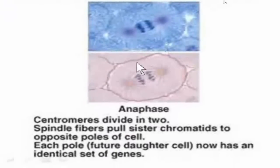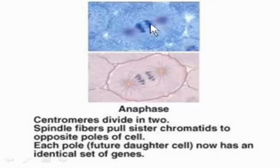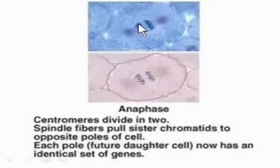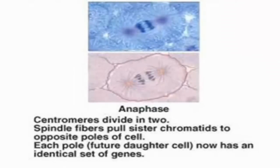During the next phase, called anaphase, the spindle fibers actually pull the chromatids apart at the centromere, dividing them into two. One set of sister chromatids heads towards one side of the cell, and the other set heads towards the other side of the cell. Remember, each sister chromatid is identical to its other, and each has the full amount of DNA for that chromosome. So when these masses of chromatids get to opposite sides of the cell, both sides will have the full amount of DNA for that cell to function.